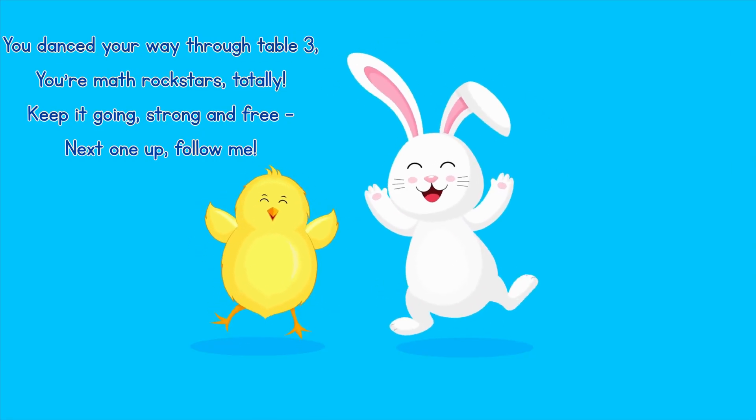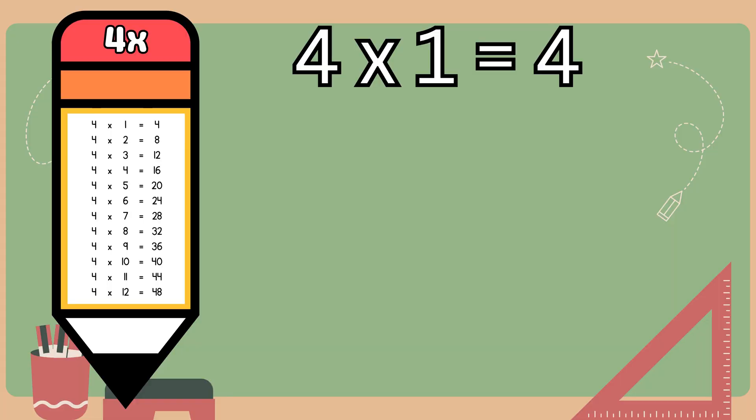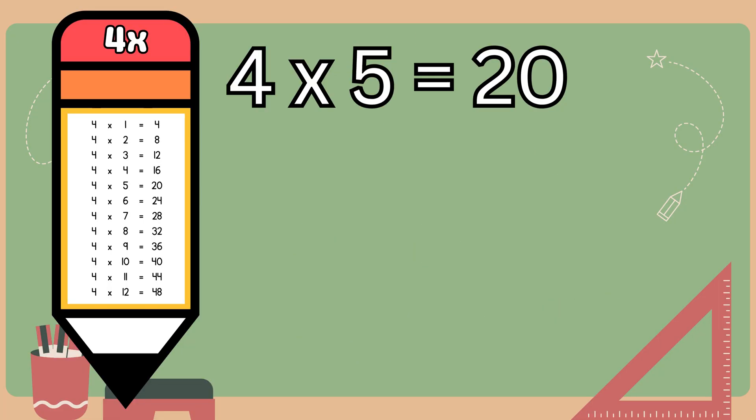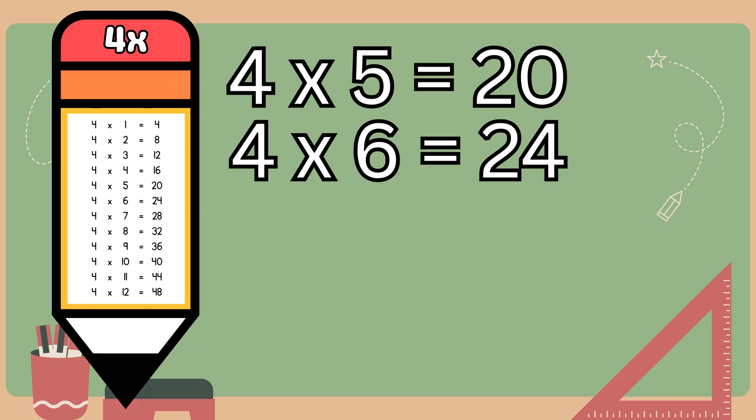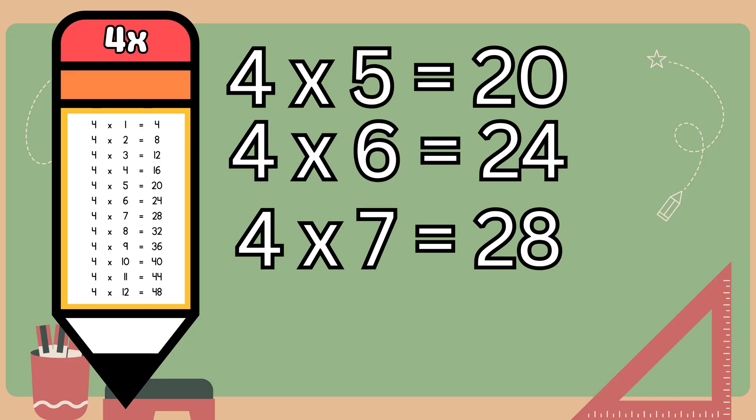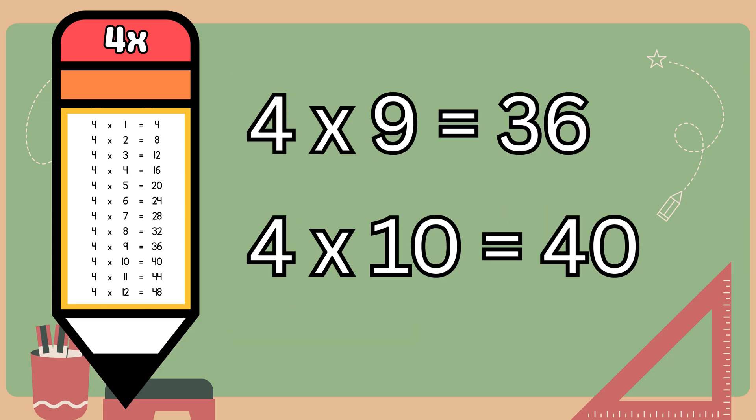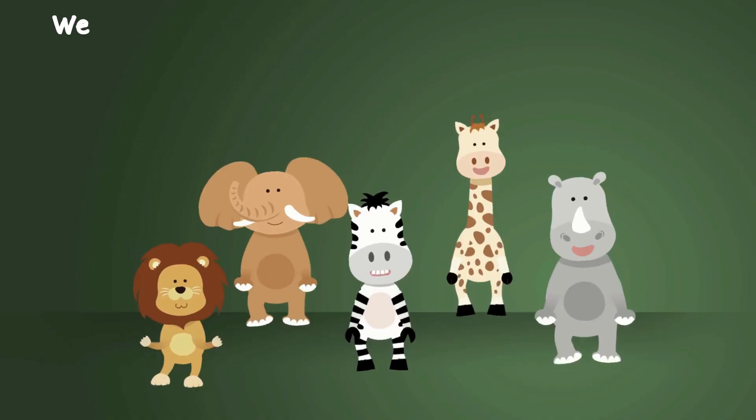Table of four! Four ones are four, four twos are eight, four threes are twelve, four fours are sixteen, four fives are twenty, four sixes are twenty-four, four sevens are twenty-eight, four eights are thirty-two, four nines are thirty-six, four tens are forty.